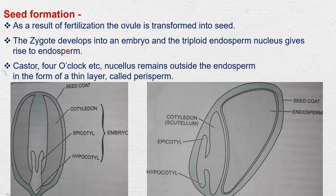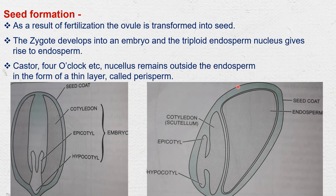The zygote develops into an embryo and the triploid endosperm nucleus gives rise to endosperm. The synergids and antipodal cells generally disappear, and the nucellus is used up in embryo formation. But in some seeds like castor, 4 o'clock, etc., the nucellus remains outside the endosperm as a thin layer — this is called perisperm. If the nucellus is not completely used up and some remains, that condition is called perisperm.